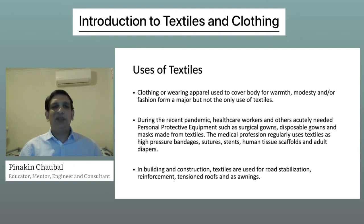During the recent pandemic, healthcare workers and others acutely needed personal protective equipment such as surgical gowns, disposable gowns and masks made from textiles. The medical profession regularly uses textiles as high-pressure bandages, sutures, stents, human tissue scaffolds and adult diapers.